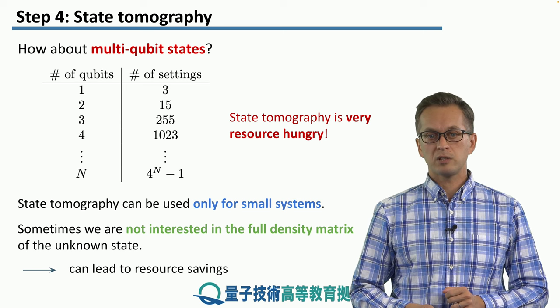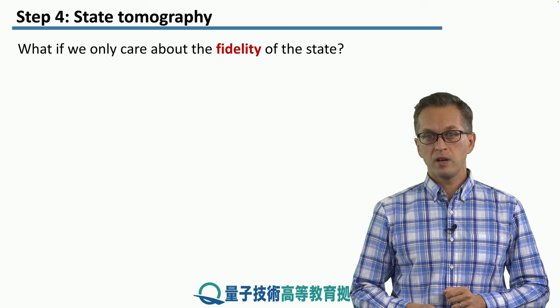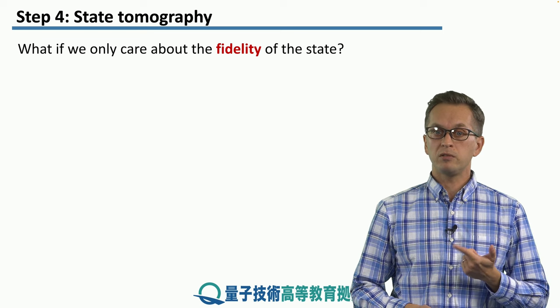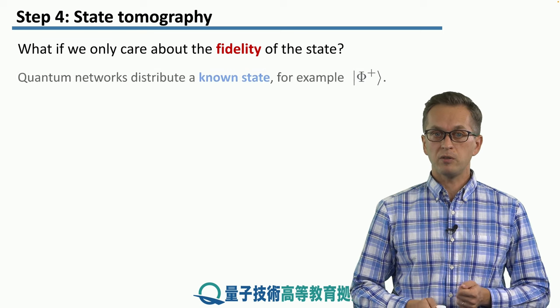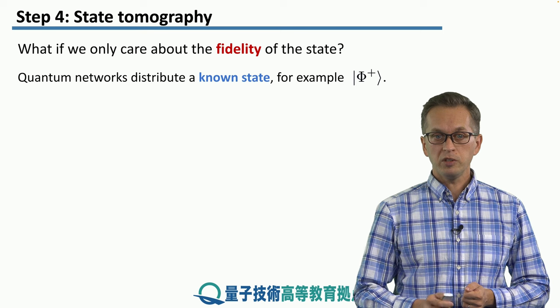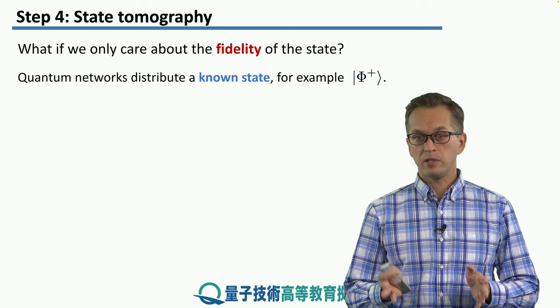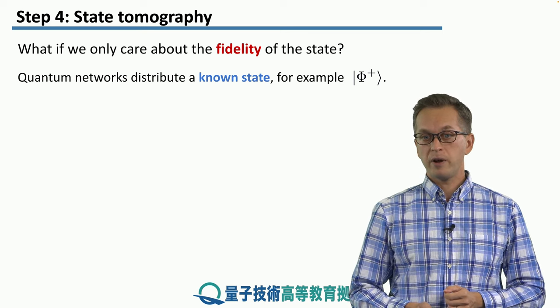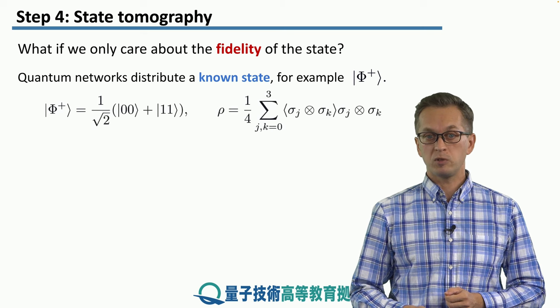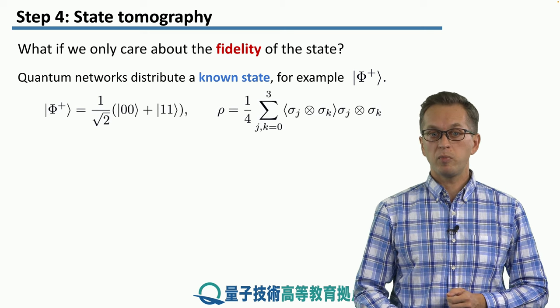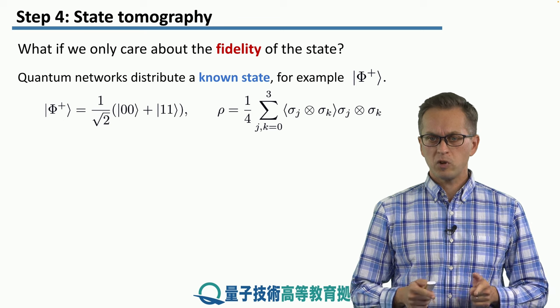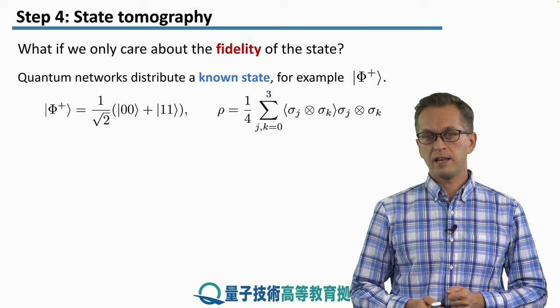But often we are not interested in the full information about the full density matrix, and this can lead to some resource savings. For example, if we only want to find out the fidelity of a state, we can do the following. In quantum networks, we often want to distribute a known state, for example, one of the Bell pairs given by |Φ⁺⟩, which is a superposition of |00⟩ plus |11⟩. So let's compute the expression for the fidelity of such a state.